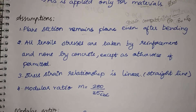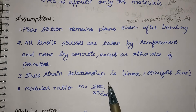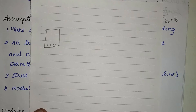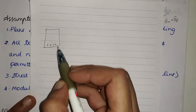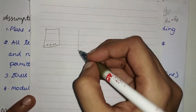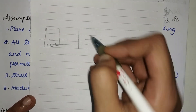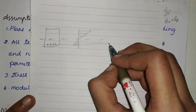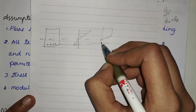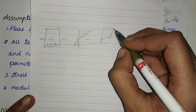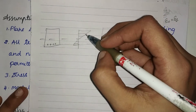The second assumption is that all tensile stresses are taken up by reinforcement and none by the concrete, except as otherwise permitted. The third assumption is that the stress-strain relationship is linear. In Working Stress Method, the stress profile across the beam section is linear, whereas in Limit State Method there was a parabolic profile and a constant profile, with no stress diagram below the neutral axis.